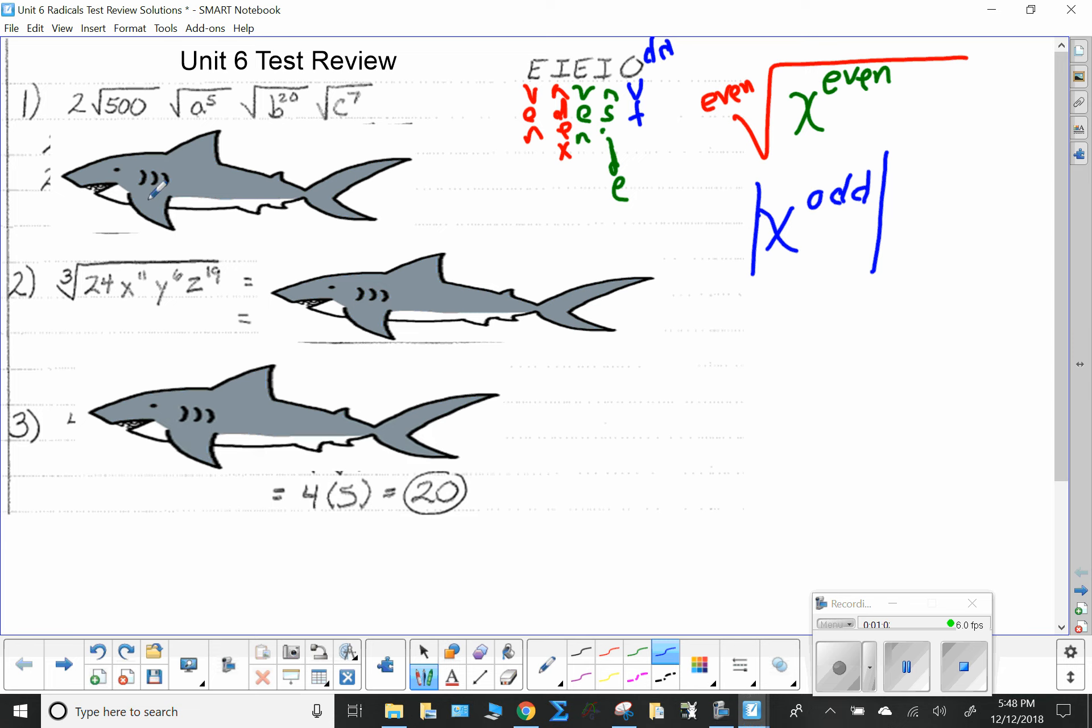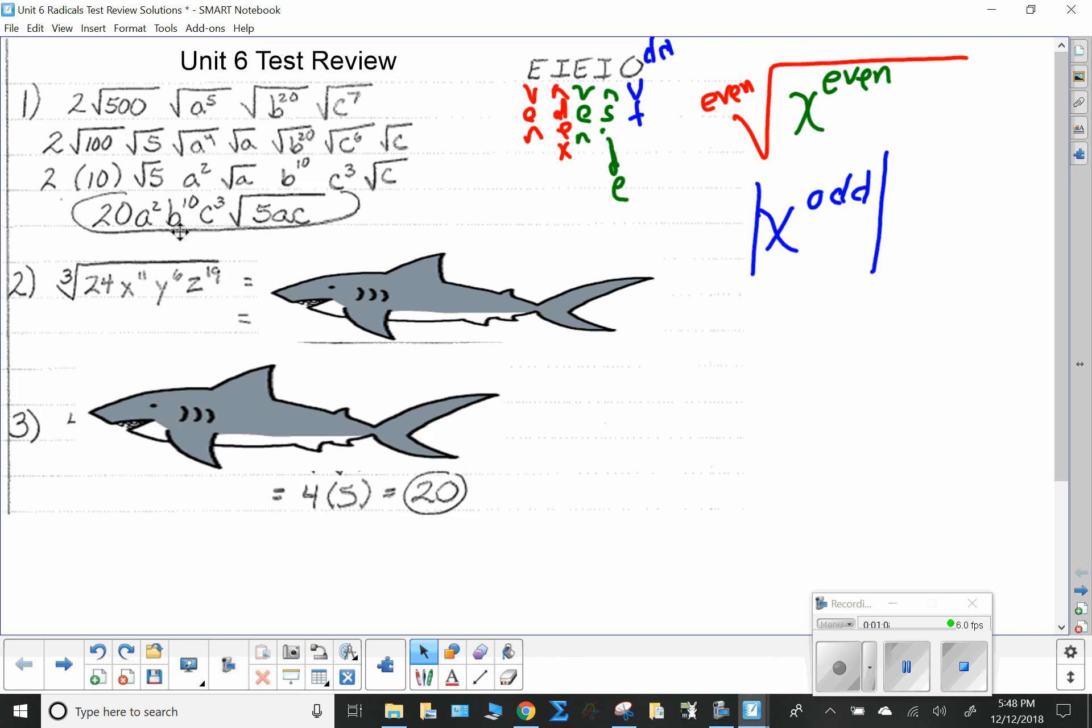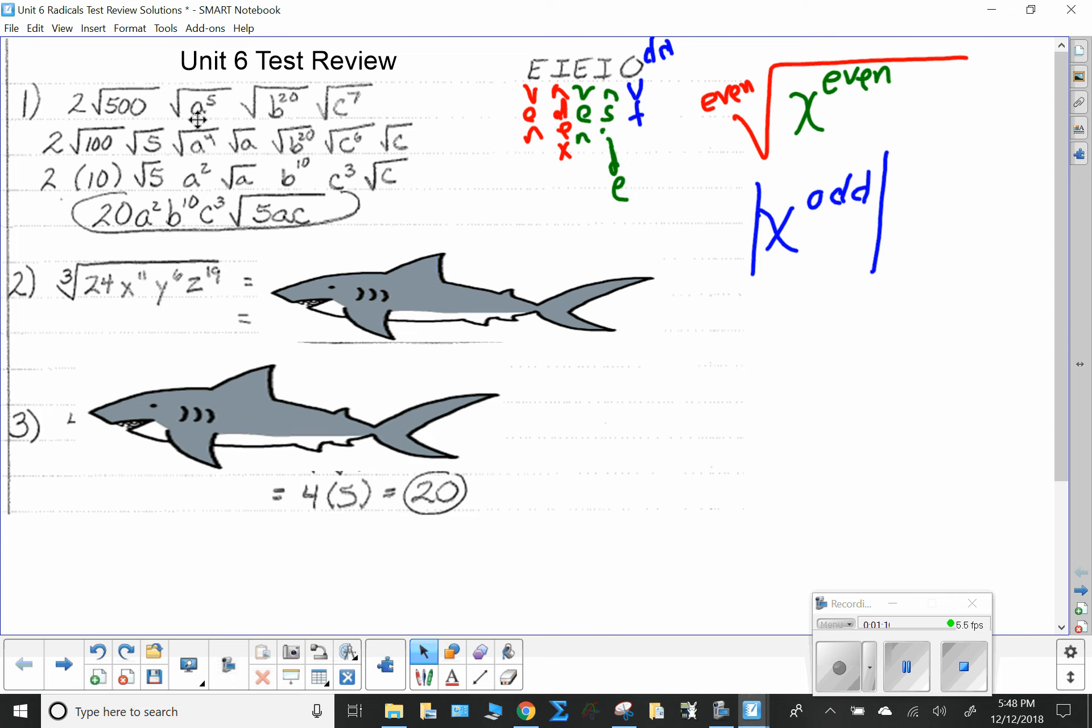Without further ado, let's take a look at these. We have 2 square root of 500, square root of a to the fifth, square root of b to the twentieth, square root of c to the seventh. I've taken and broken it apart. Notice that 500 becomes square root of 100, square root of 5. Square root of a to the fifth: a to the fourth and a.